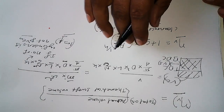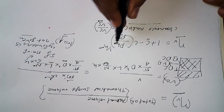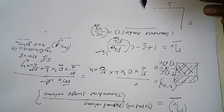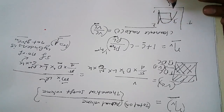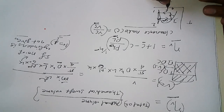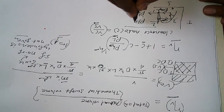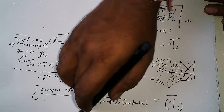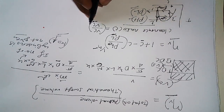Here, n is the polytropic index. To understand PH and PL, refer to the TS diagram of the VCRS cycle — states 1, 2, 3, 4. The evaporator operates at lower pressure PL and the condenser operates at higher pressure PH. So for volumetric efficiency, we use PH as higher pressure and PL as lower pressure.